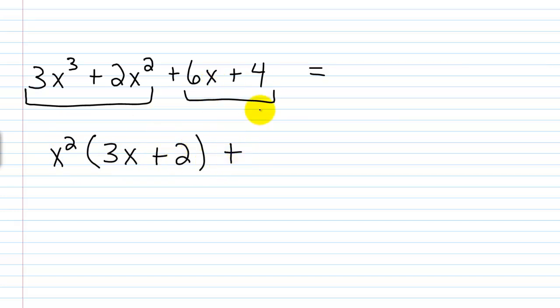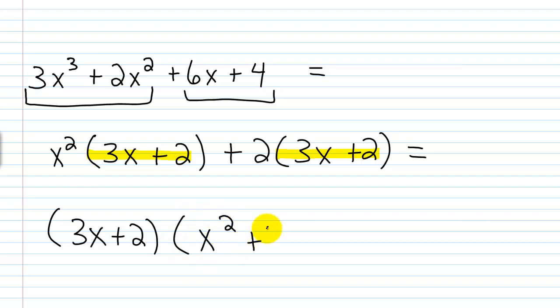And then if I look over here, if I have 6x plus 4, I can pull out a 2. So if I pull out a 2, I'd have a 3x plus 2. As you can see, this yields a common binomial factor of 3x plus 2. So now I can pull this out and I'll have 3x plus 2 times x squared plus 2.